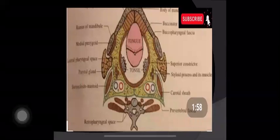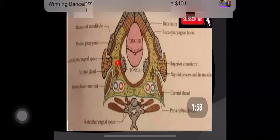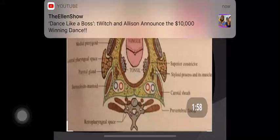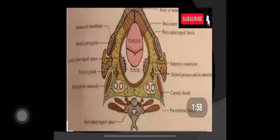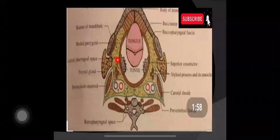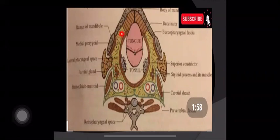Looking at the diagram, the lateral pharyngeal space is visible here, with the retropharyngeal space adjacent to it. The anterior compartment and posterior compartment are separated by the stylohyoid process. The carotid sheath lies posteriorly, and the parotid gland's medial lobe faces the lateral pharyngeal space. The superior constrictor muscle and tonsil are also visible. If there is an infection, the tonsil may shift towards the midline causing respiratory problems.